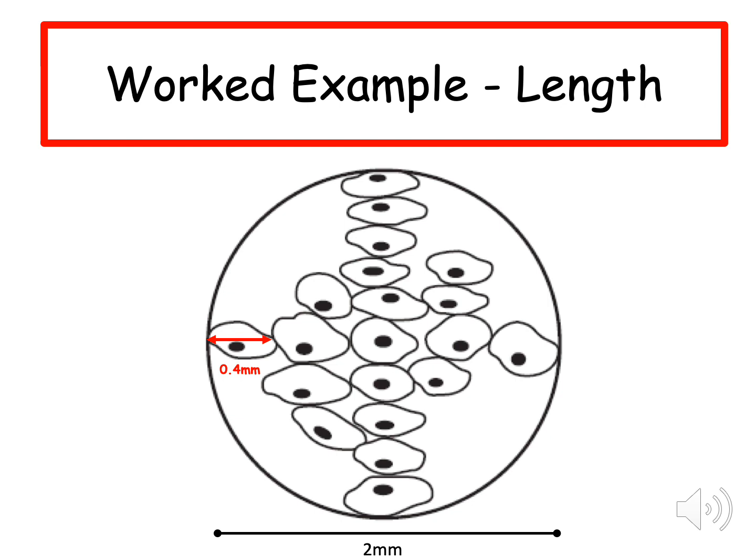This means a cell in this sample has a length of 0.4 millimeters, as shown in this diagram here. So each of these cells will have a length of 0.4 millimeters.